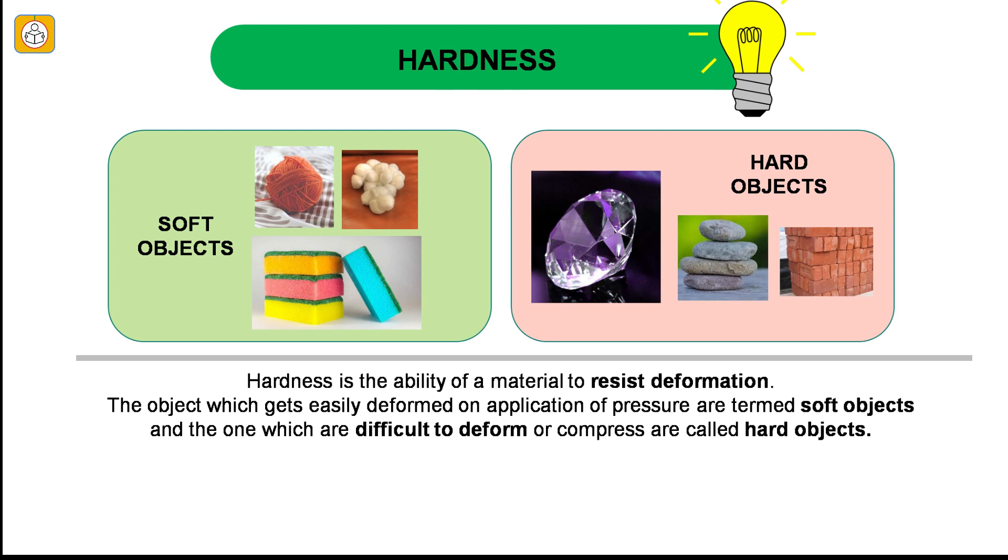Hardness is the ability of a material to resist deformation. The object which gets easily deformed or compressed on application of pressure are termed as soft objects and the one which do not deform or compress easily are called hard objects. For example, cotton ball, wool and sponge are some examples of soft objects. Diamond is one of the hardest known objects to mankind. Stones, bricks are some commonly found hard objects.